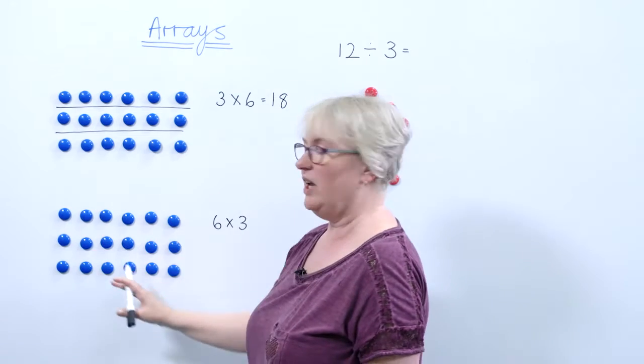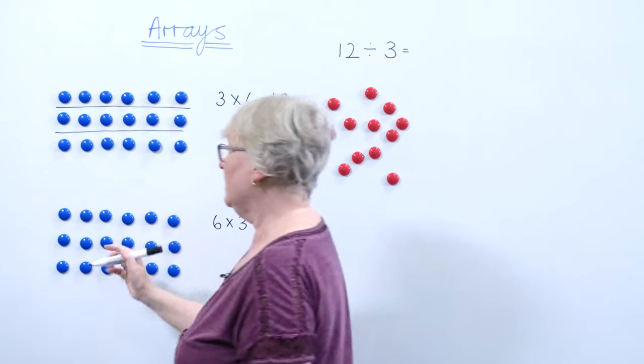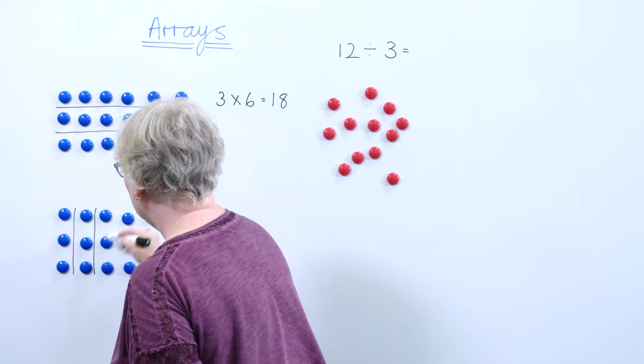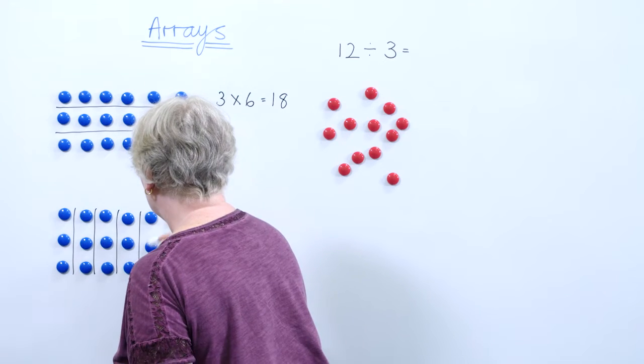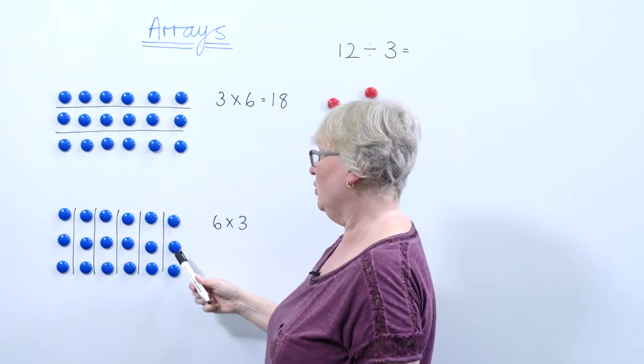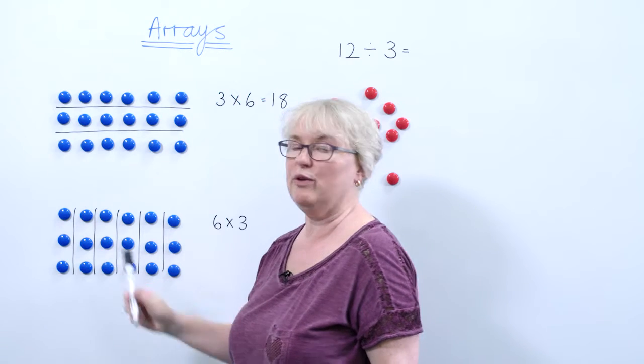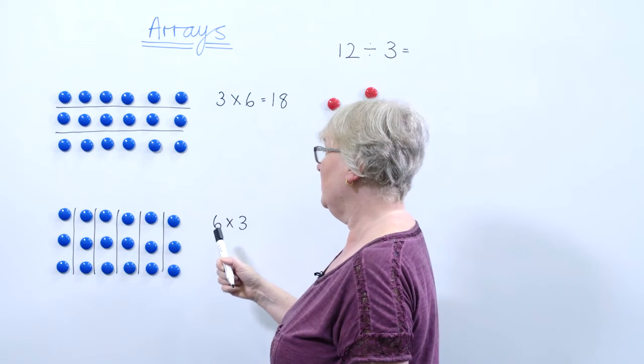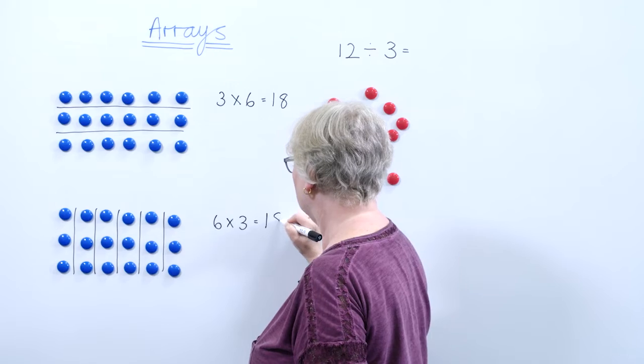If I look at the same array, I can then draw the lines going down to look at the columns that I've got. I now can see I've got six columns. In each column there are three counters. It's showing me that six threes are also 18.